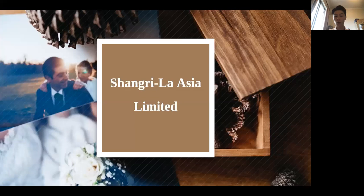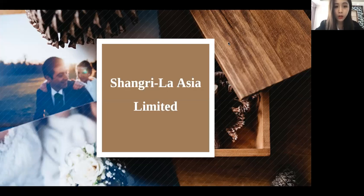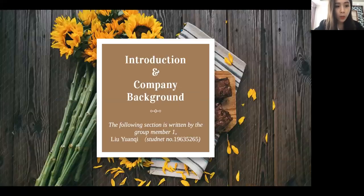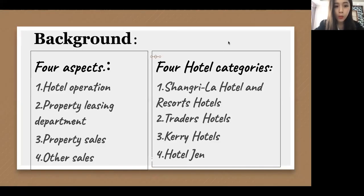Let's pass the microphone to Dorothy to introduce the company background of Shangri-La Asia Limited. Shangri-La Hotel Group belongs to Hong Kong listed Shangri-La Limited. Since the first Shangri-La Hotel in China in 1971, Shangri-La Hotel has been constantly moving towards the world. Besides hotel operations, it has three other aspects: property listing division, property sales, and other sales. In order to better meet consumer demand, four different types of hotels have been opened: Shangri-La Hotels and resorts, Traders Hotels, Kerry Hotels, and hotel gyms.